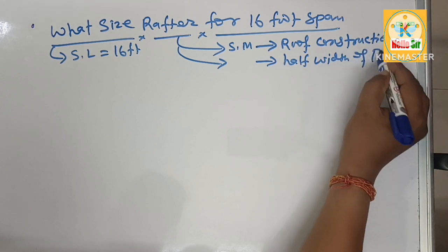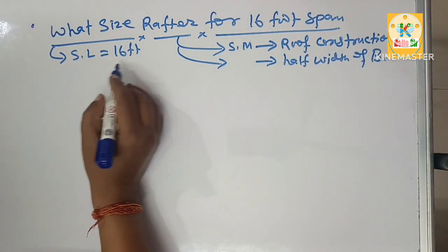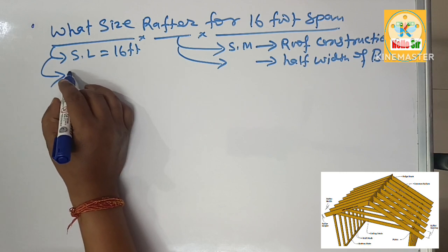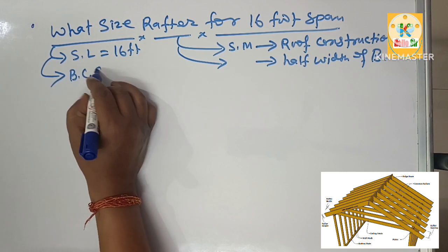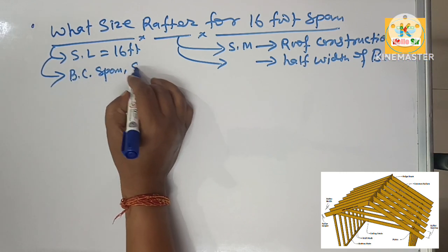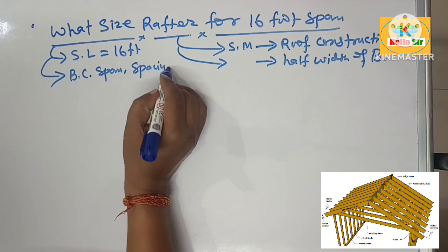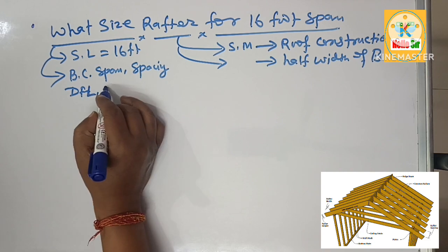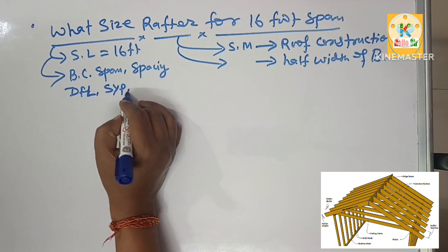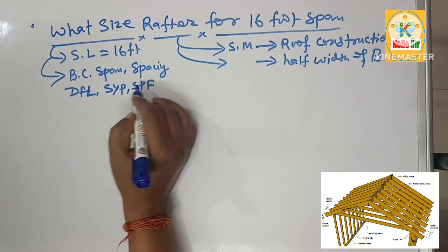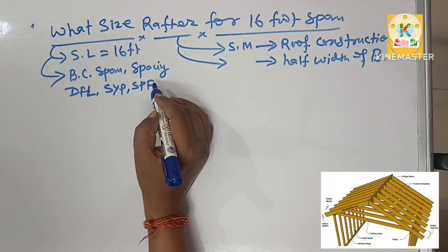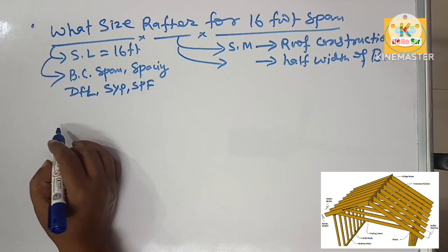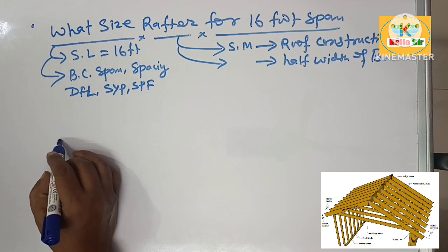The rafter size depends on many factors like building code, the span length, the spacing, the types of wood like DFL, SYP, or SPF, or maybe grade like grade 1 or grade 2.